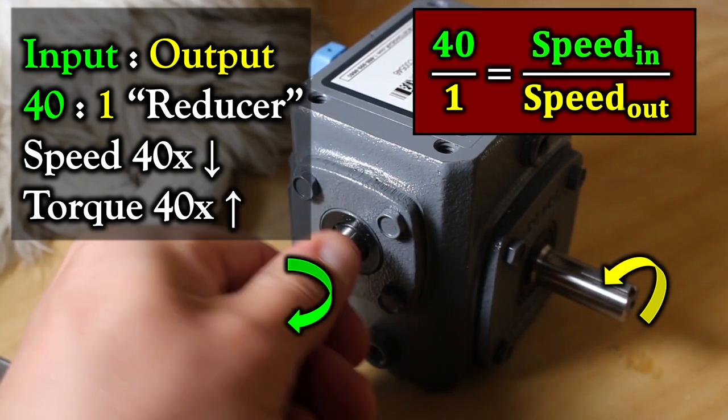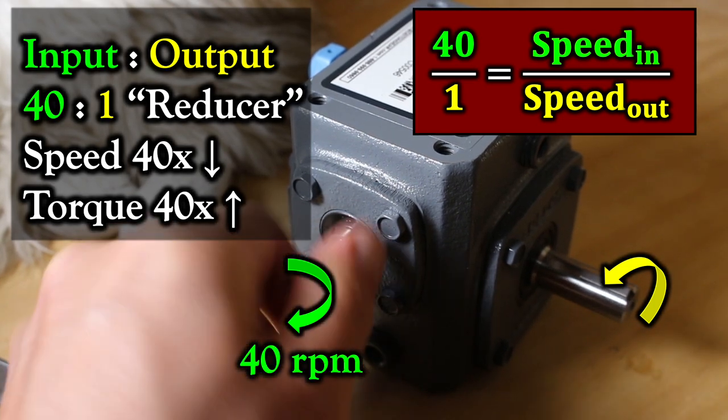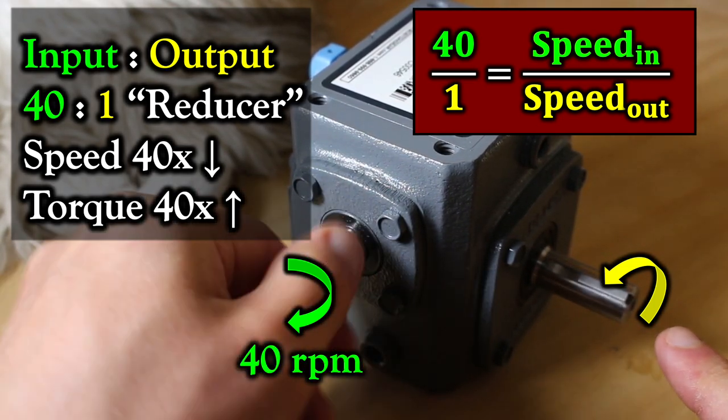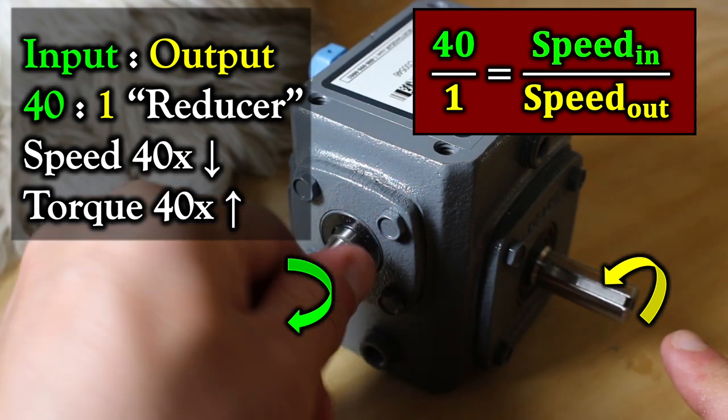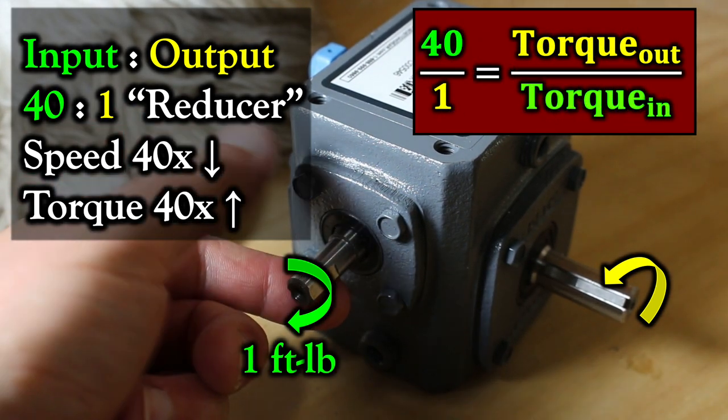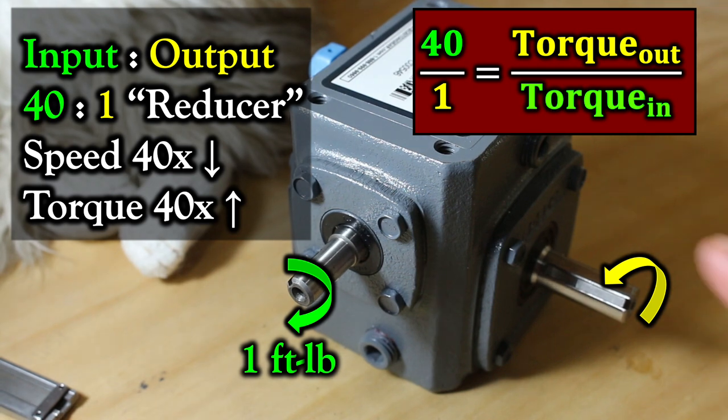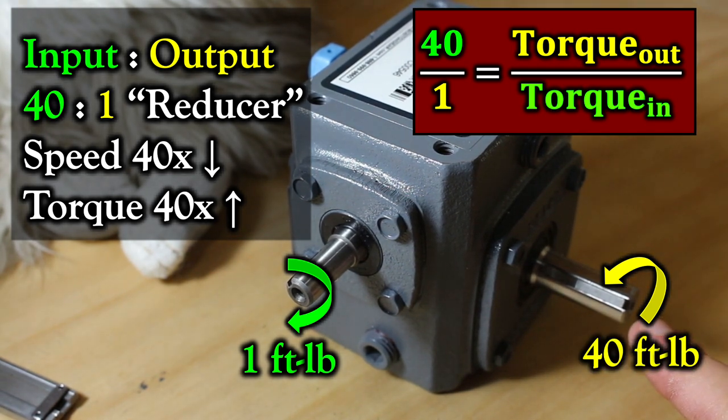That means for every 40 input rotations, my output shaft rotates one rotation, and that means for every 1 foot-pound of torque, I get 40 foot-pounds of torque.